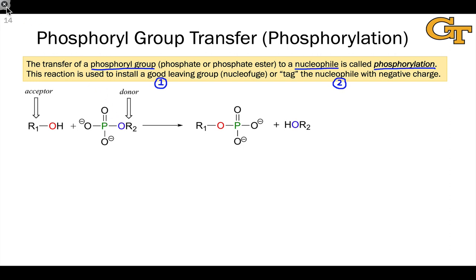One quick nomenclature point: the phosphoryl group is PO3. In phosphoryl group transfer reactions, we often refer to the molecule that on the reactant side has the phosphoryl group that's going to give it to the nucleophile as the phosphoryl donor. The nucleophile, which is going to donate a pair of electrons to gain the phosphoryl group, is referred to as the phosphoryl acceptor.